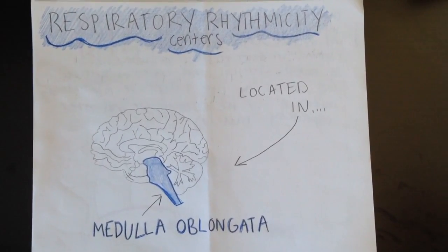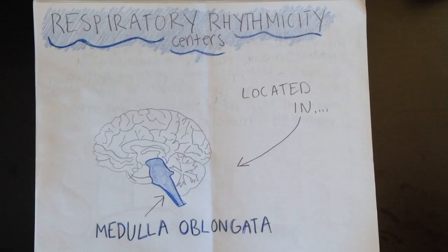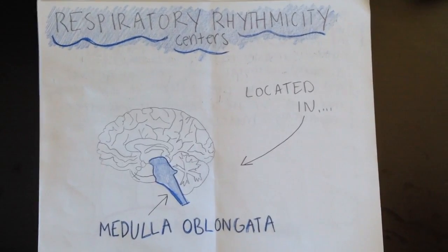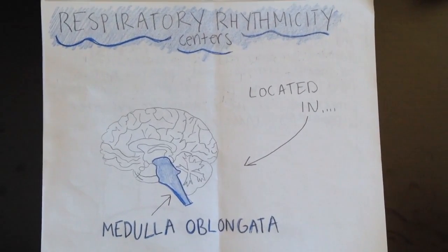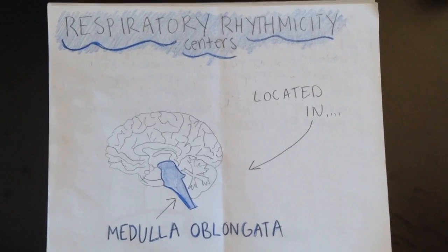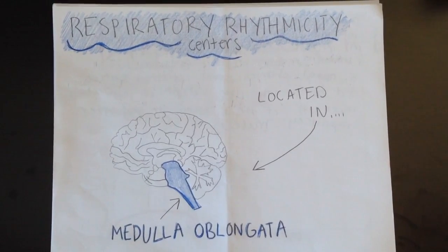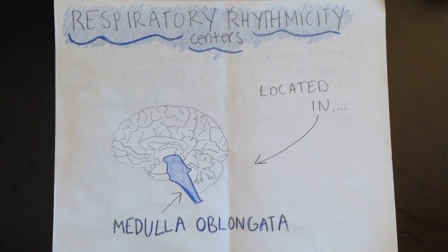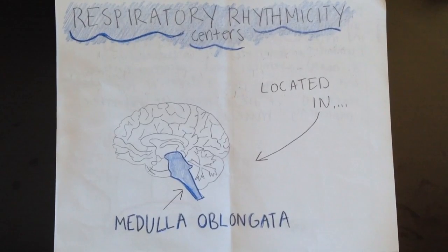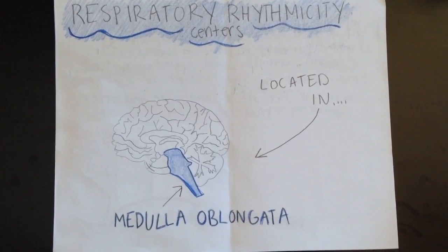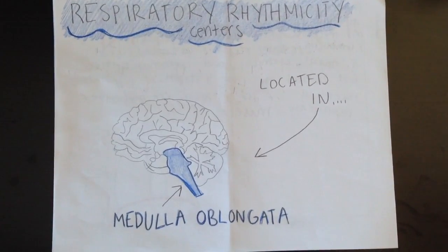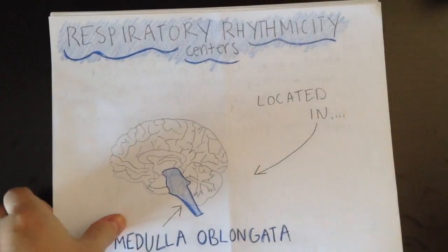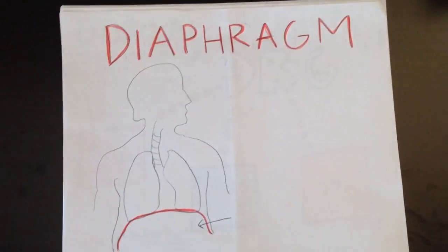The respiratory rhythmicity centers are located in the lowermost part of the brain stem, in the medulla oblongata. The respiratory rhythmicity center receives controlling signals of a neural, chemical, and hormonal nature, controlling the rate and depth of respiratory movements of the diaphragm and other respiratory muscles.